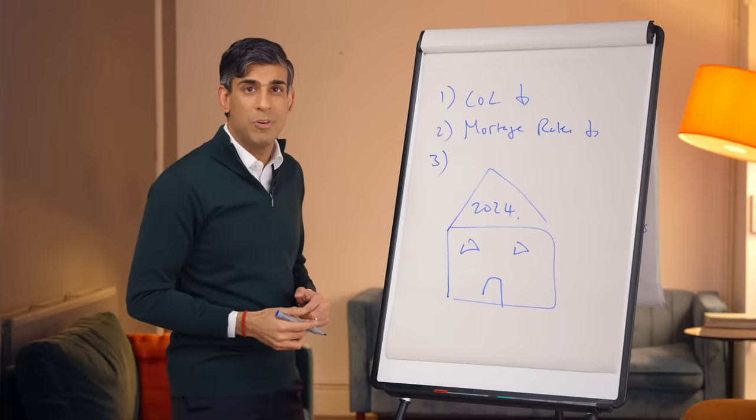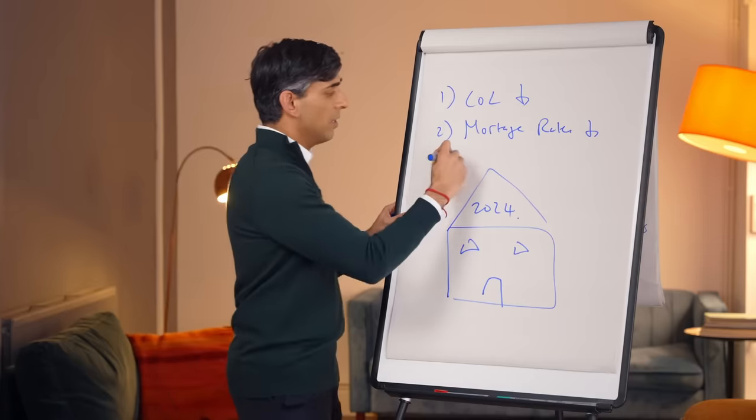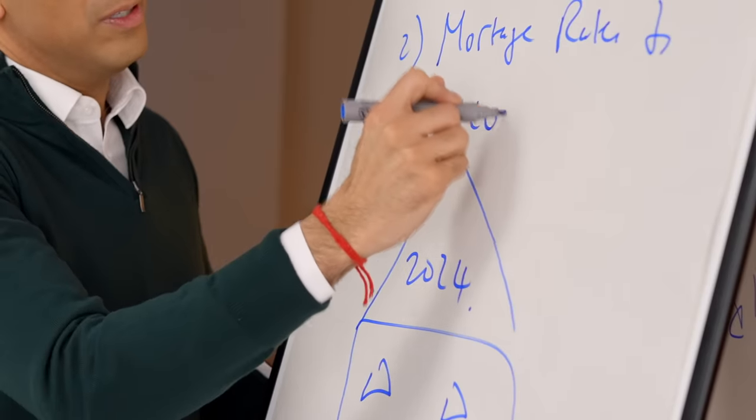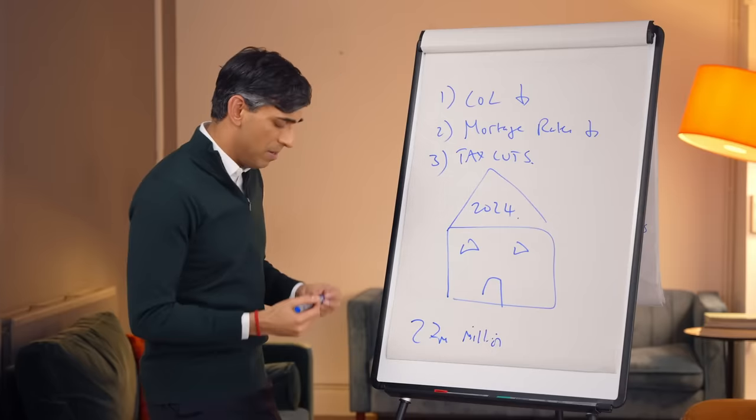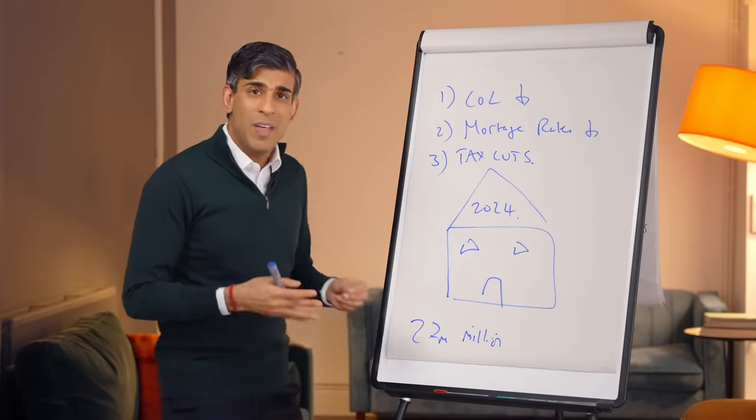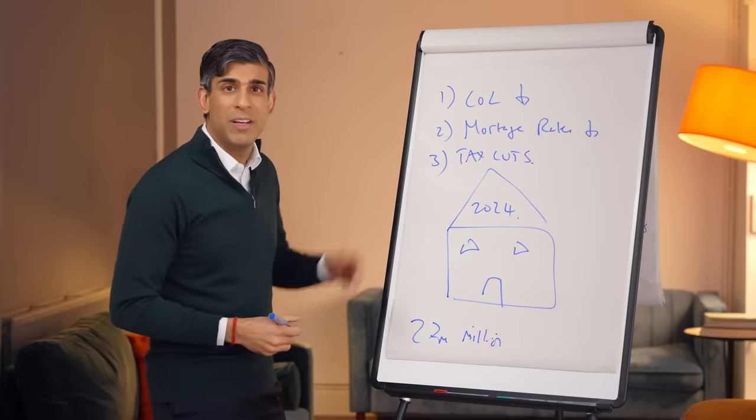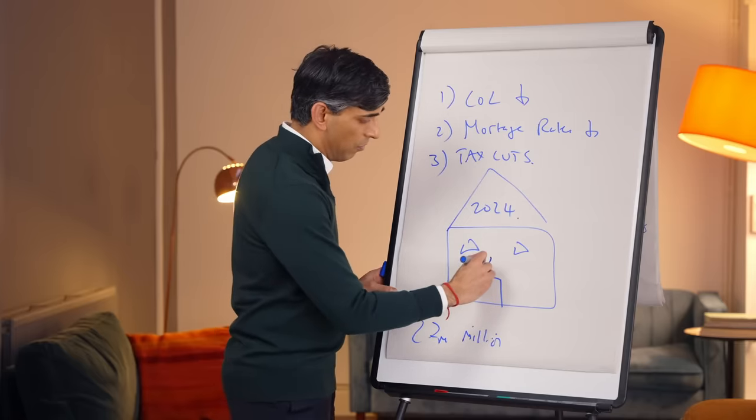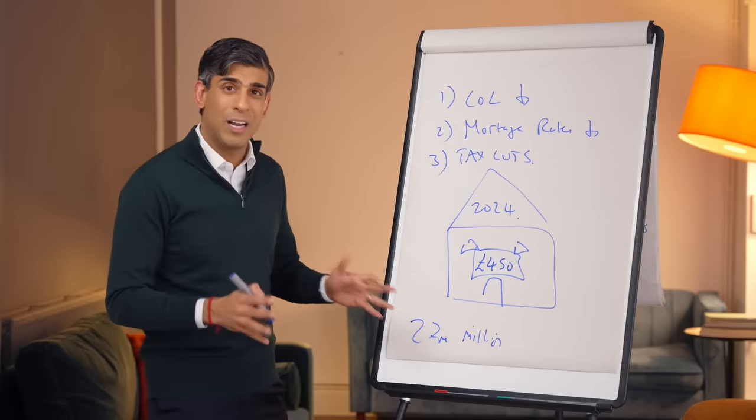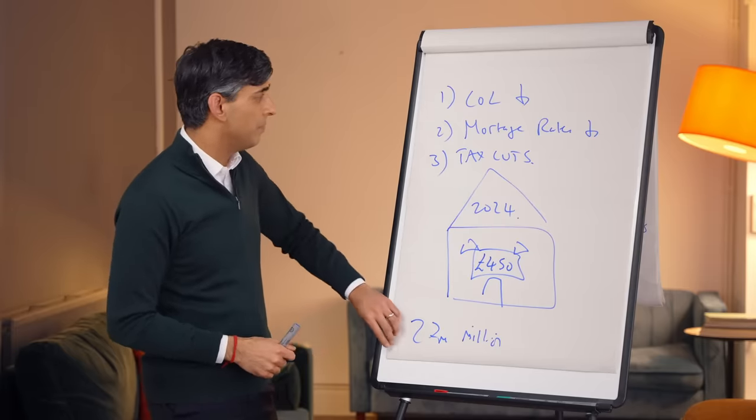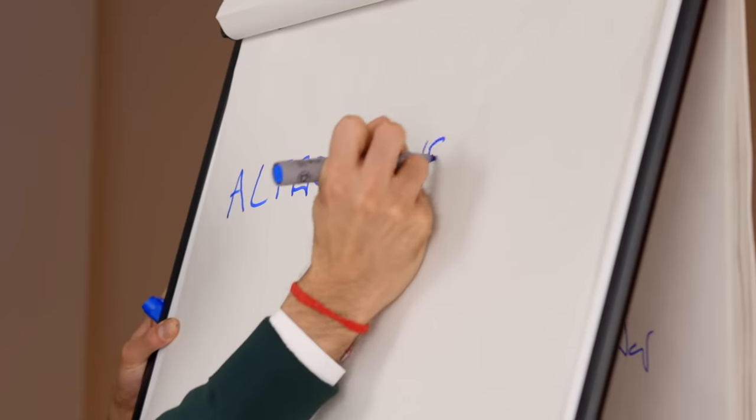because economic conditions have improved and the plan is starting to work, we're able to start cutting people's taxes. 27 million people in January in their pay packets will start to see the benefit of that tax cut, which is worth around £450 to someone earning an average salary of £35,000. So that plan is starting to work and we're showing progress.